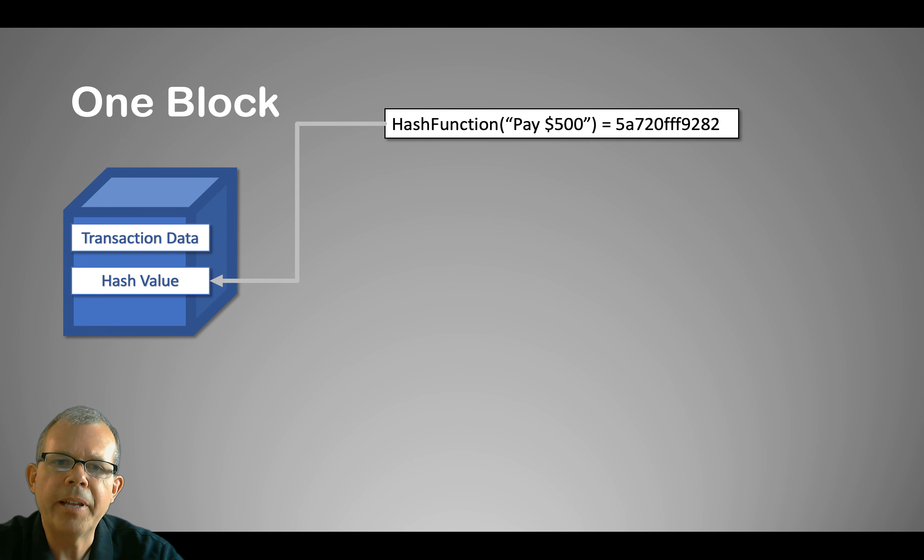For instance, if I put in the string pay $500, my hash function will always give me this 5A720, and whatever else. You can hash an entire book, you could hash a single letter or a number, and you will get an answer that appears to be random at first, but is actually verified as repeatable. If you want to know more about hashing, you can see another video that I've created about how hashing works.